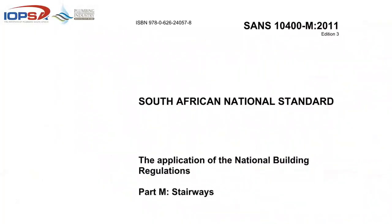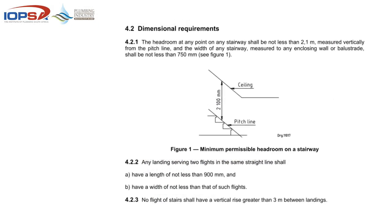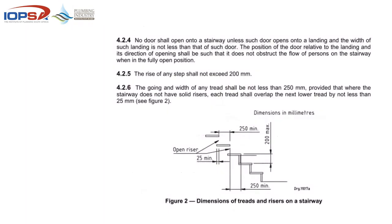We'll start off with Part M — stairways. There's not a lot in there for us other than trying to avoid them and not break through or demolish them as we go along. There's a minimum headlight or clear space, so we don't fit any geysers or anything on a stairwell that could block a fire escape. There are a number of details around the steps, the size, and the pitch line — not too much to do with us as plumbers.